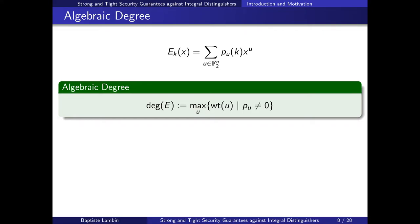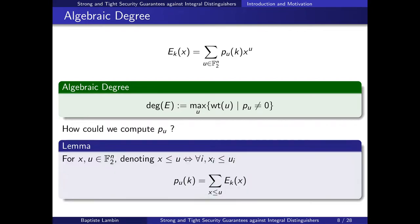A very useful notion to study block ciphers in this representation is the algebraic degree. The algebraic degree is essentially the degree of the highest-degree monomial in x that appears in the ANF — considering only monomials in x. This is defined as the degree of the block cipher. To show that a monomial x^u appears in the ANF means that the corresponding key polynomial p_u is non-zero. One way to show this uses the following well-known lemma.